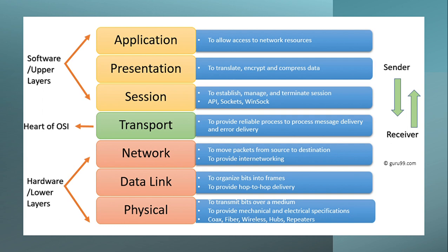The transport layer provides reliable process-to-process message delivery and error handling. The network layer moves packets from source to destination to provide internetworking. The data link layer organizes bits into frames and provides hop-to-hop delivery.